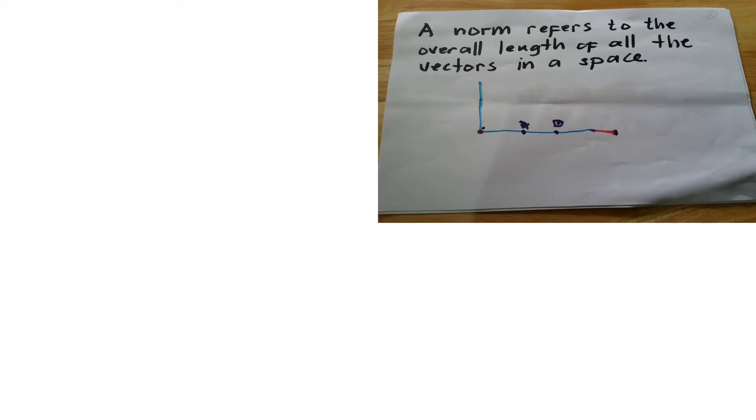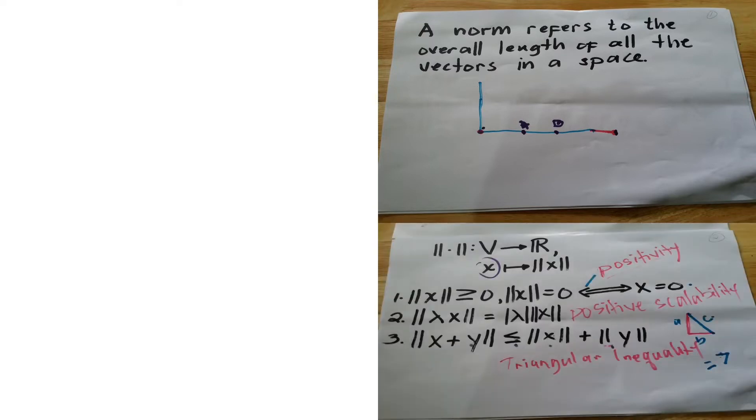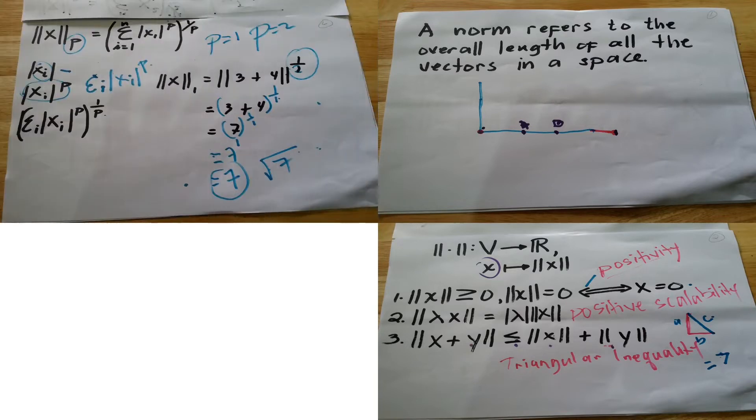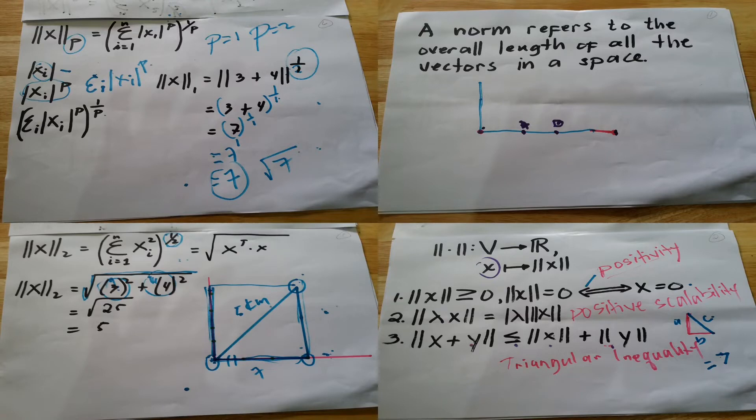In our last session, we learned about examining vector norm rows. We learned that a norm refers to the overall length of the vectors in a space. There are different kinds of norm: L0, L1, L2, the P-norm, and L-infinity norm.